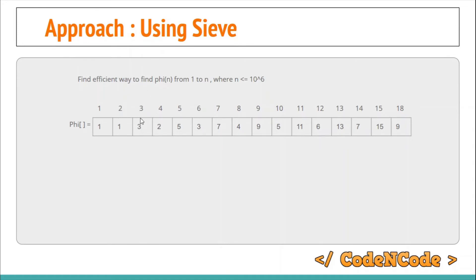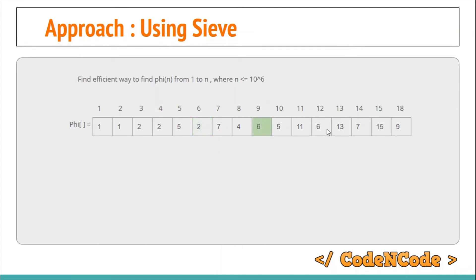For prime 3, starting from index 3, for each multiple — 3, 6, 9, 12, and so on — we divide the result stored at that index by 3 and multiply by 2. So the result at index 3 becomes 2, at index 6 it also becomes 2, at index 9 it becomes 6, at index 12 it becomes 4, at index 18 it becomes 10, and so on.